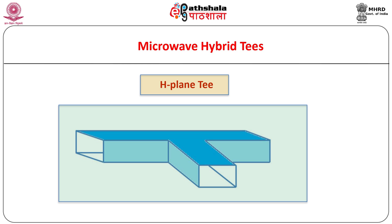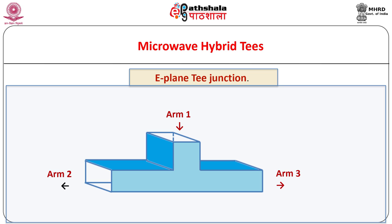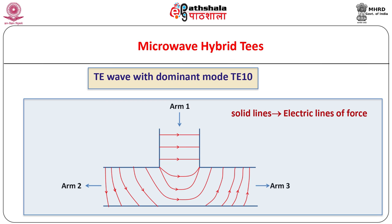One may have a description of E and H-T in some different manner also. Let us number the three arms of the junction as arm one, arm two and arm three as shown. It is very interesting to see how the electric field gets split and appears into arm two and arm three of the main waveguide when fed through arm one of the E-plane T-junction. Let us consider a TE wave with dominant mode TE10 entering through arm one which travels further towards arm two and arm three. The electric lines of force are represented by solid lines in the diagram, and at the end of the conducting walls the electric field lines originating and finally terminating on the waveguide walls are as shown.